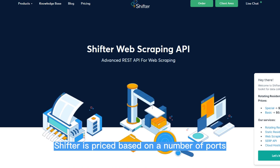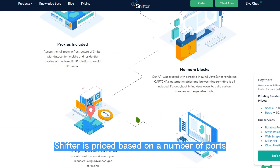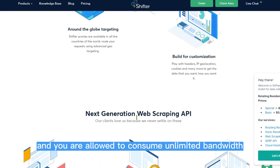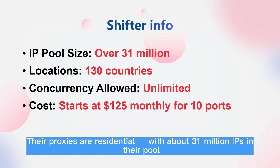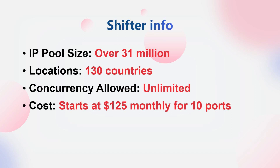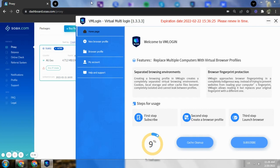Unlike Luminati, Shifter is priced based on the number of ports and you are allowed to consume unlimited bandwidth. Their proxies are residential with about 31 million IPs in their pool.